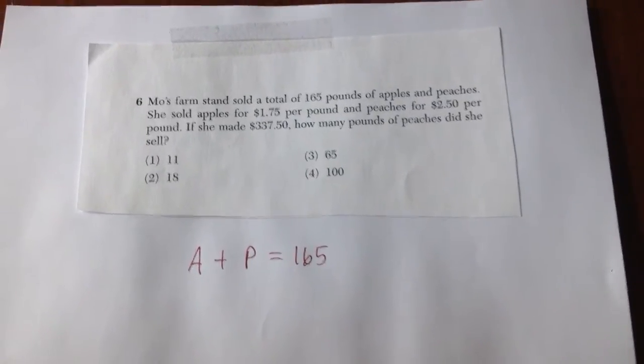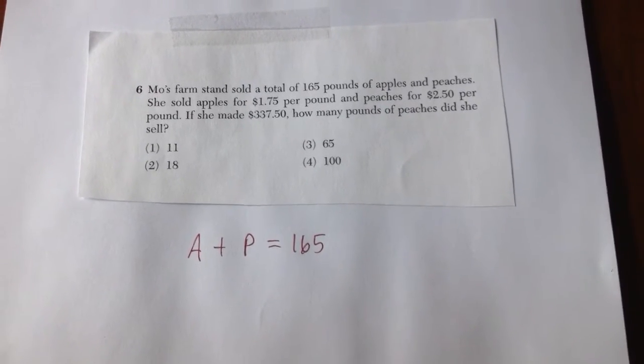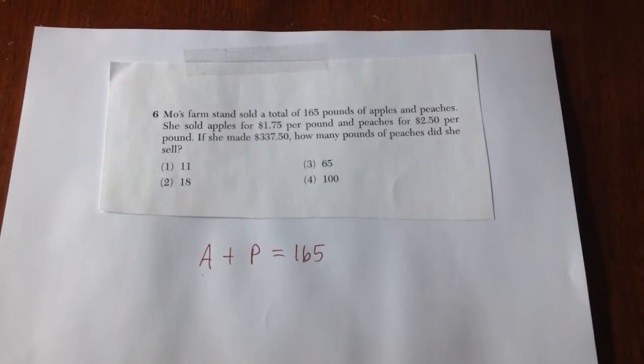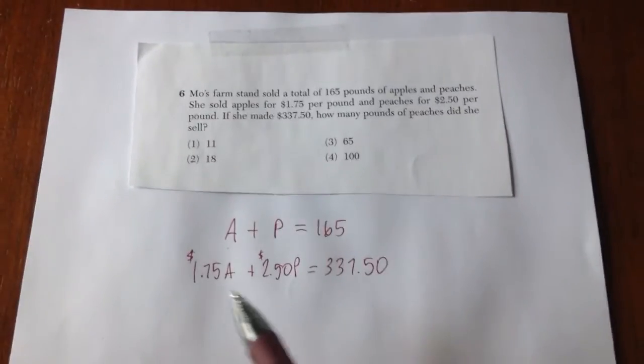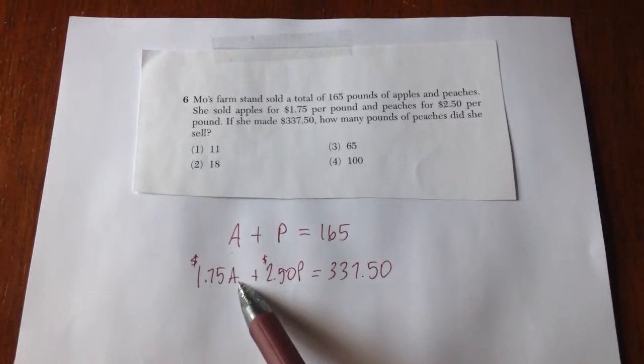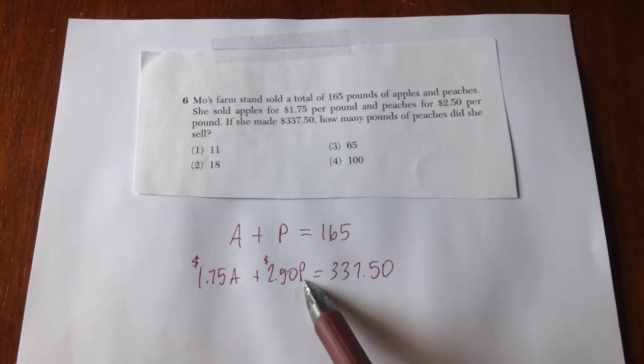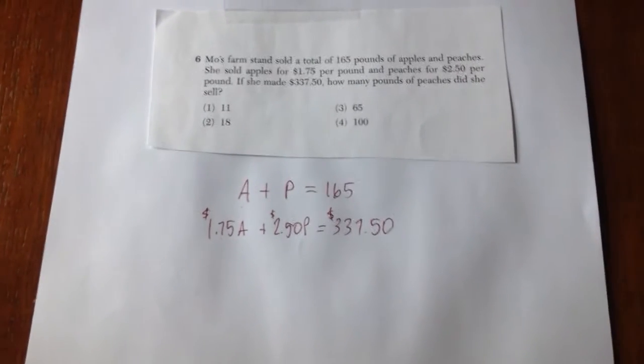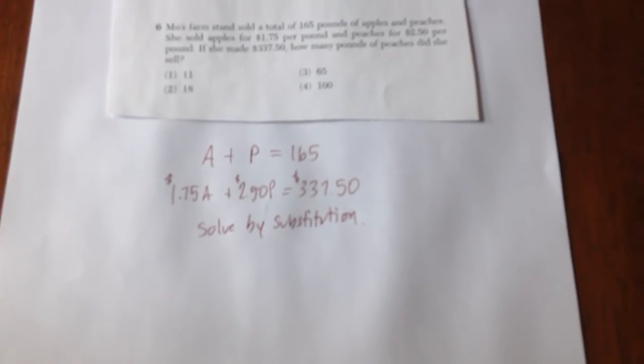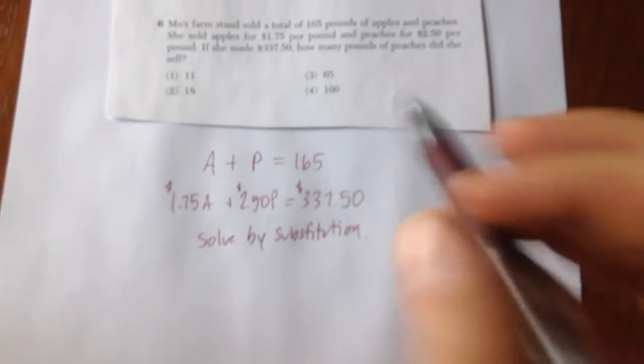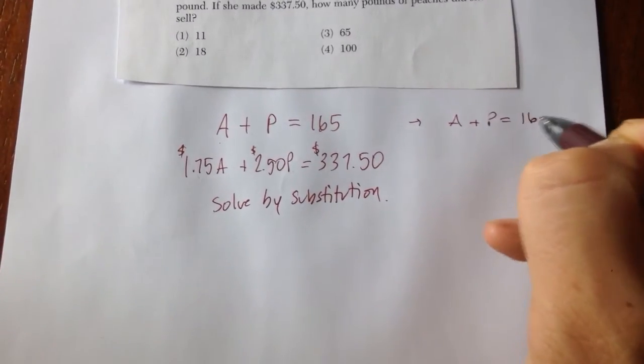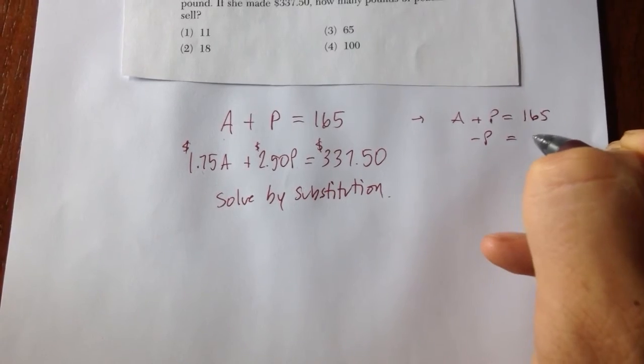Number six is a system of equations type problem. We know that the number of apples plus peaches is 165. We know that it's 175 per pound of apples and 250 dollars per pound of peaches and that equals three hundred and thirty seven dollars and fifty cents. I'm going to solve this by using substitution. What I'm going to do is take this equation, a plus p equals 165, and I'm going to solve for a.